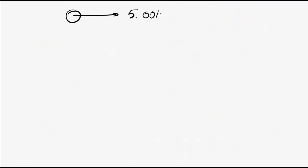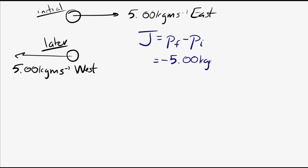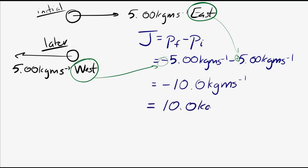In another example, an object moves at 5 kilogram meters per second east, then after an impulse it moves at 5 kilogram meters per second west. The impulse is the change in momentum: negative 5 (west) minus positive 5 (east) equals negative 10 kilogram meters per second, or 10 kilogram meters per second to the west.